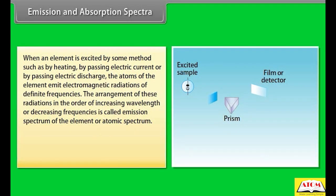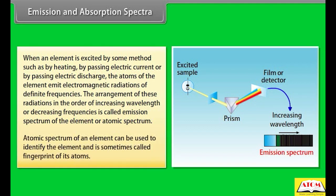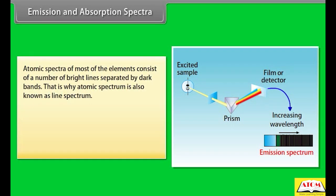Emission and absorption spectra: When an element is excited by heating, by passing electric current, or by electric discharge, the atoms emit electromagnetic radiations of definite frequencies. The arrangement of these radiations in order of increasing wavelength is called the emission spectrum or atomic spectrum of the element. Atomic spectrum can be used to identify the element and is sometimes called the fingerprint of its atoms. Atomic spectra of most elements consist of bright lines separated by dark bands — hence also called line spectrum.